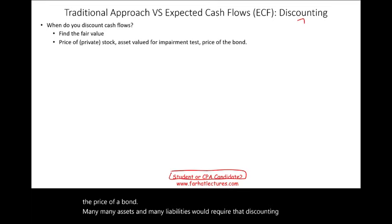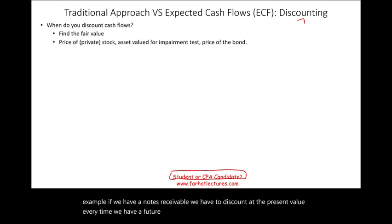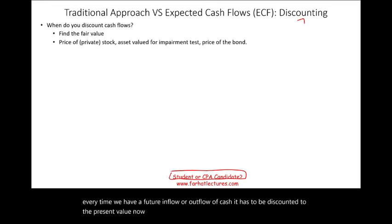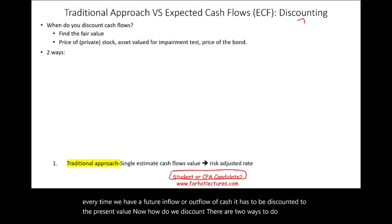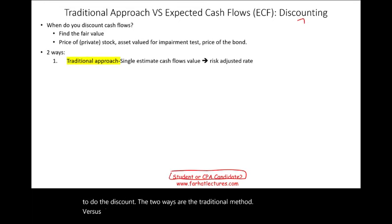For example, if we have a notes receivable, we have to discount it at the present value. Every time we have a future inflow or outflow of cash, it has to be discounted to present value. Now, how do we discount? There are two ways: the traditional method versus the expected cash flow method.